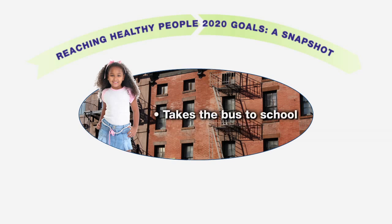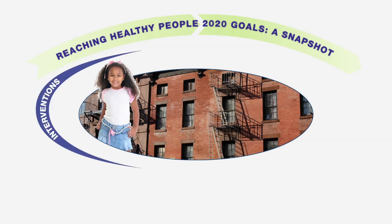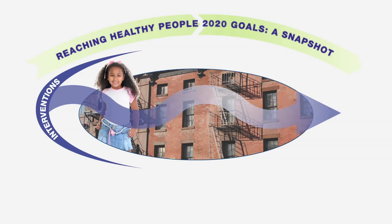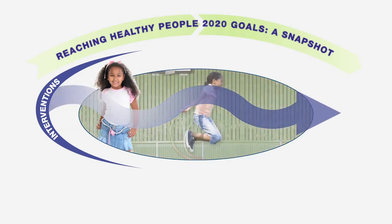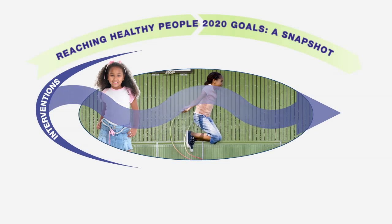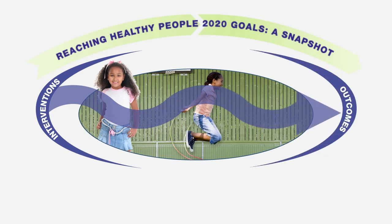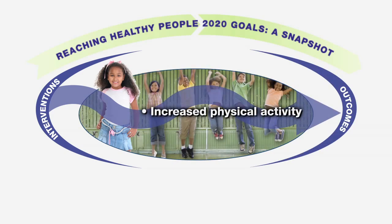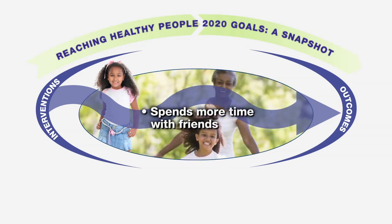Carla takes the bus to school and back. Her grandmother stays with her after school, and Carla typically watches four hours of TV a day. Now, picture an intervention that can change Carla's determinants of health. A group of parents work with the school board and the local YMCA to keep the gym at Carla's school open later on weekdays and on days when school is closed. This provides community members with a safe space to exercise and play. Now Carla's grandmother meets her at the gym after school, increasing her physical activity level as she plays with friends and walks the track — and she's also watching less TV.